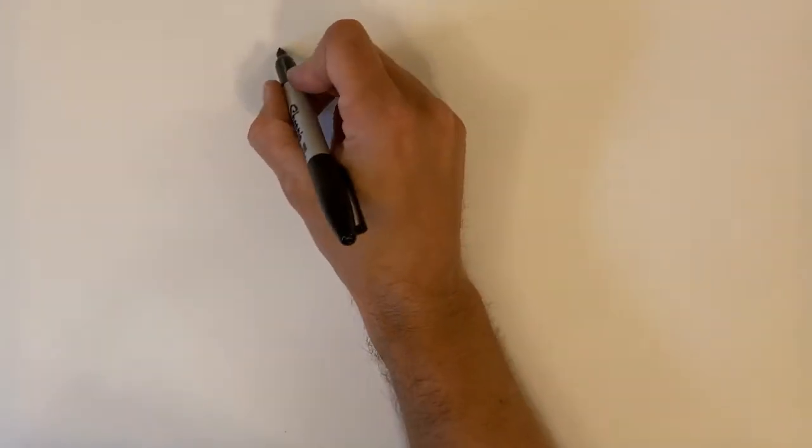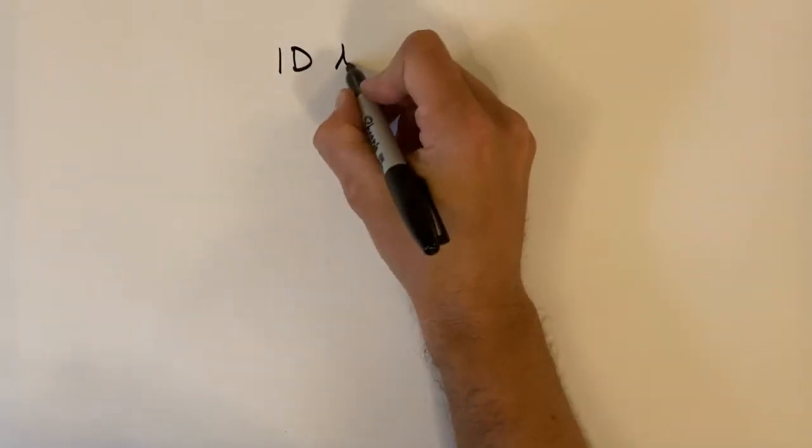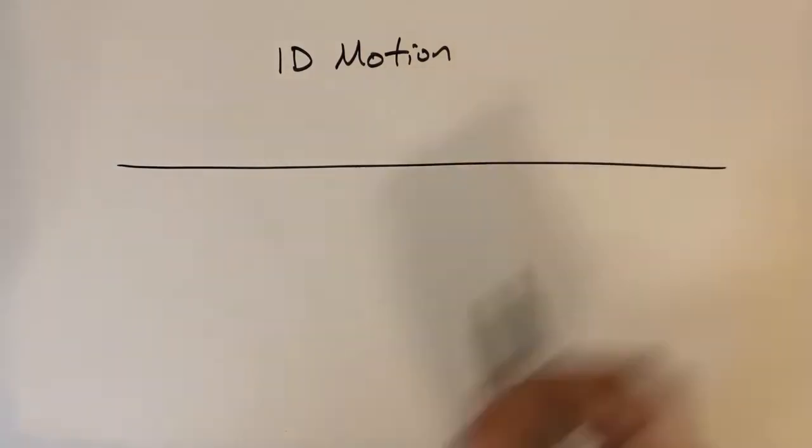What we're going to first discuss is one-dimensional motion. When I'm talking about one-dimensional motion, all I mean is something moving in a single axis or along a straight line.